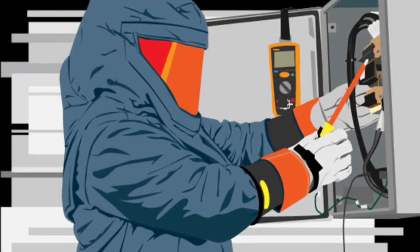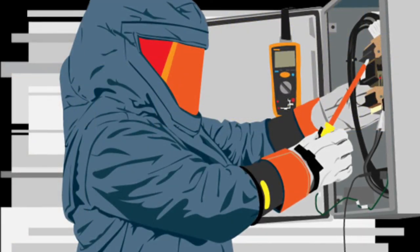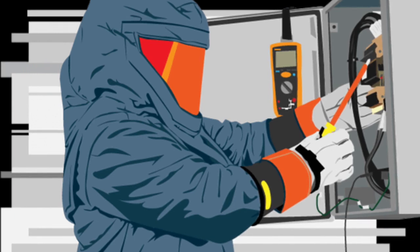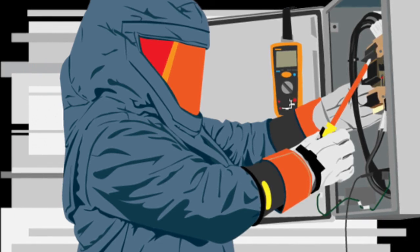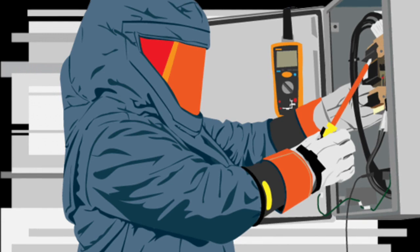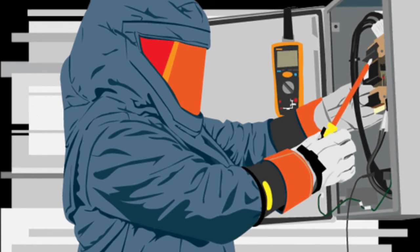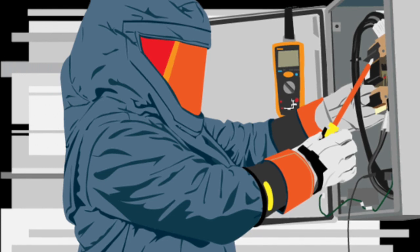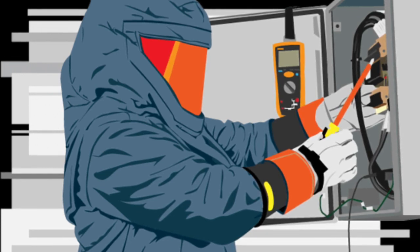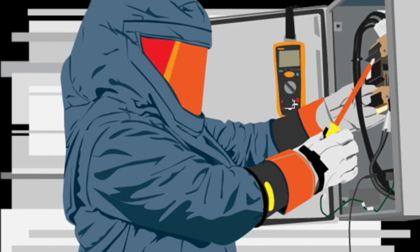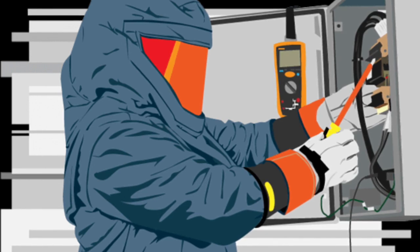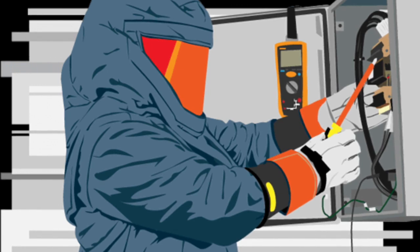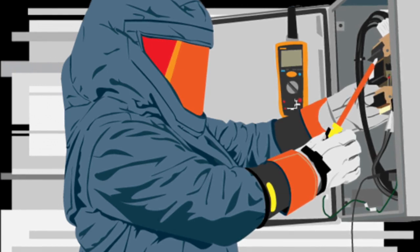Electrical safety program principles include inspecting and evaluating the electrical equipment; maintaining the electrical equipment's insulation and enclosure integrity; planning every job and documenting first-time procedures; de-energizing if possible; anticipating unexpected events; identifying electrical hazards and reducing the associated risk; protecting employees from shock, burn, blast, and other hazards; using the right tools for the job; assessing people's abilities; and auditing the principles.